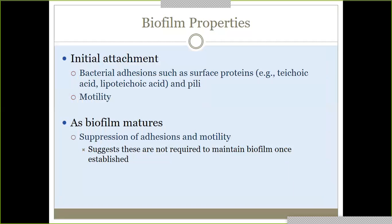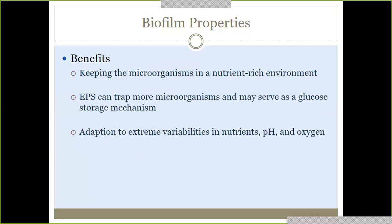At initial attachment, bacterial adhesion will use surface proteins, pili, and motility. As the biofilm matures, it suppresses that adhesion and motility because it's already attached and established — it doesn't need those as much anymore. The benefits of biofilm properties include living in a nutrient-rich environment. The exopolysaccharide layer (EPS) helps trap further organisms and delivers glucose to them. It also helps withstand changes to the environment, including pH changes.